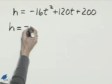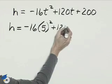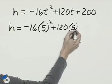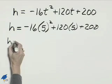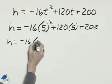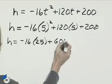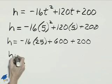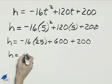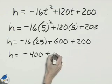h = -16(5)² + 120(5) + 200. So h equals -16 times 25 which is -400, plus 600 plus 200 equals 800. Therefore, the height is 400 feet.